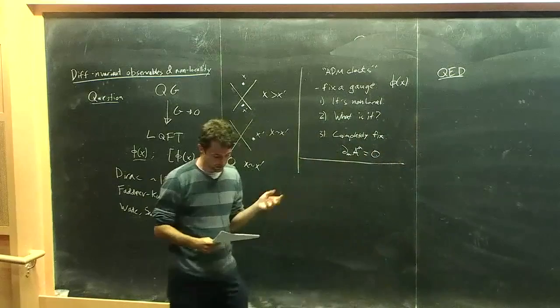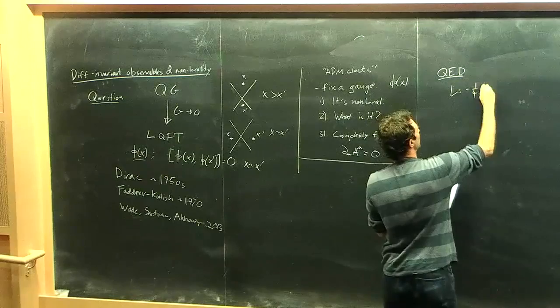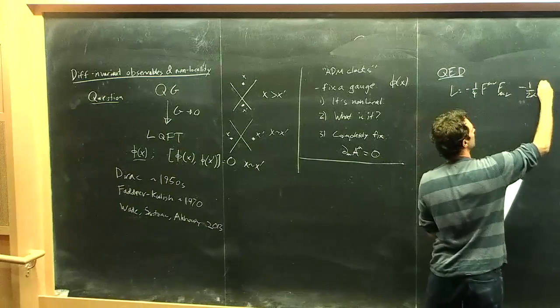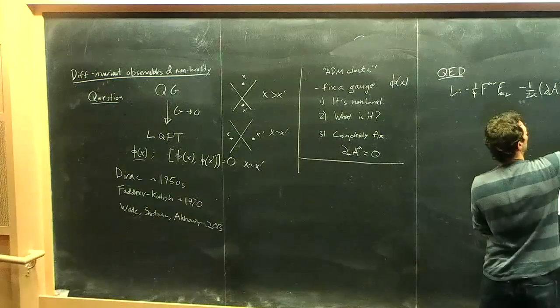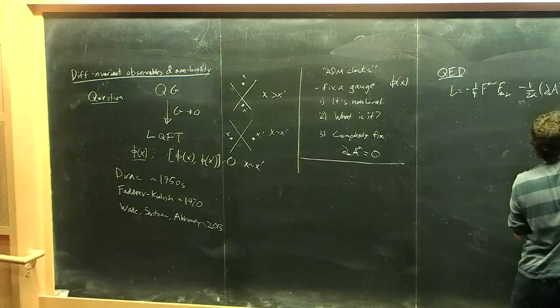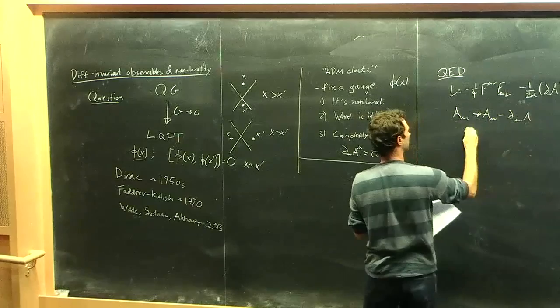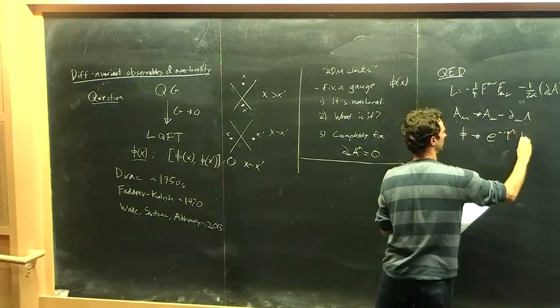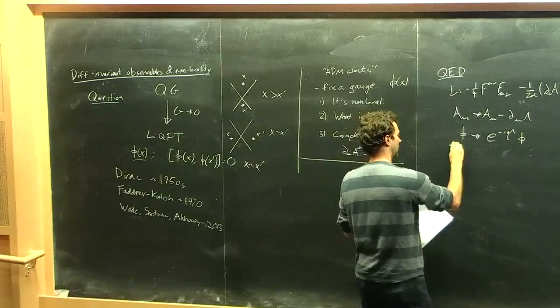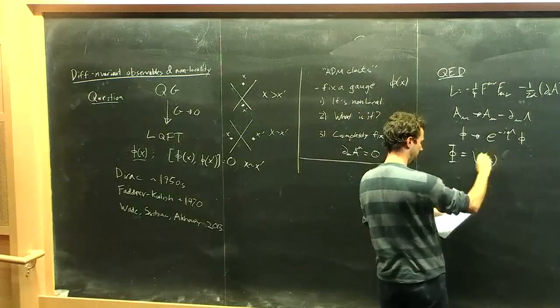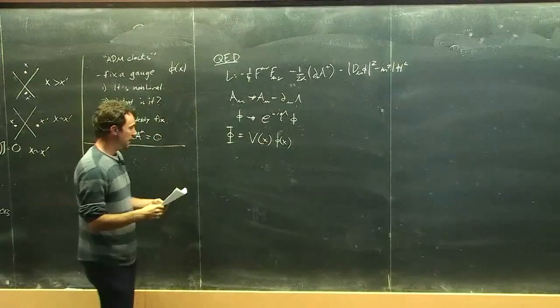To make it more concrete, I'd like to show how this works in QED. We have the standard Lagrangian, we're going to add a gauge-fixing term, and we have a charged scalar field. And now there's a gauge transformation under which our operators have to be invariant.